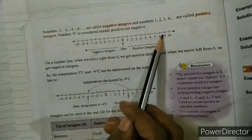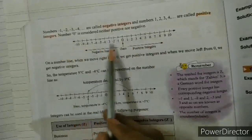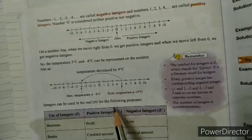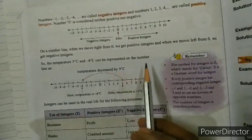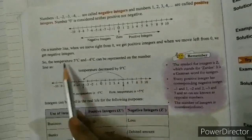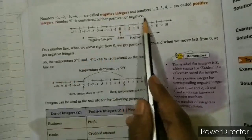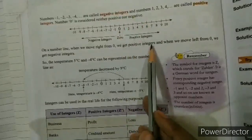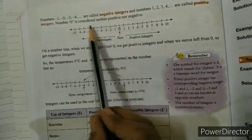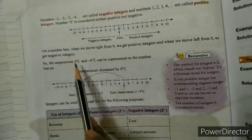The number line has both directions — towards the right and towards the left. All negative and positive numbers including 0 are known as integers. When we move right from 0, we get positive integers, and when we move left from 0, we get negative integers.